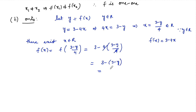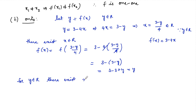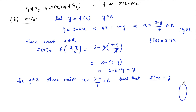Simplifying: 3 minus (3 minus y) = 3 minus 3 plus y = y. So for y belonging to ℝ, there exists x = (3 minus y)/4 belonging to ℝ such that f(x) = y. This means for every element y in the codomain, there exists at least one x in ℝ such that y is the image of x. Hence f is onto.